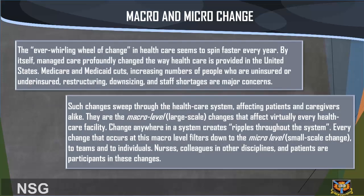Macro and micro change: The overwhelming pace of change in healthcare seems to spin faster every year. Managed care profoundly changes the way healthcare is provided. Medicare and Medicaid cuts, increasing numbers of uninsured or underinsured people, restructuring, downsizing, and staff shortages are major concerns. Such changes sweep through the healthcare system, affecting patients and caregivers alike. These are macro-level, large-scale changes that affect virtually every healthcare facility. Change anywhere in a system creates ripples throughout the system.